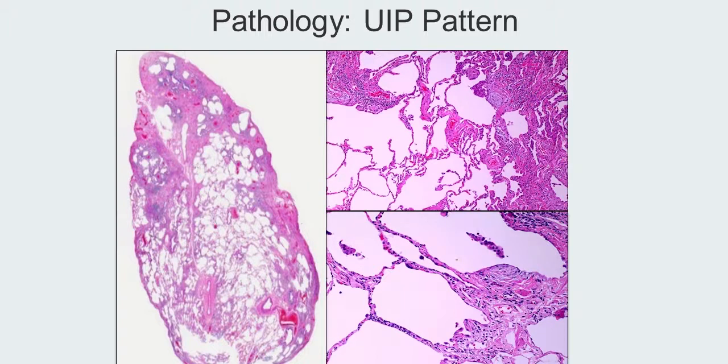So this is the marching front of the disease. It's the fibroblast that laid down the collagen that subsequently goes on to form the fibrosis.